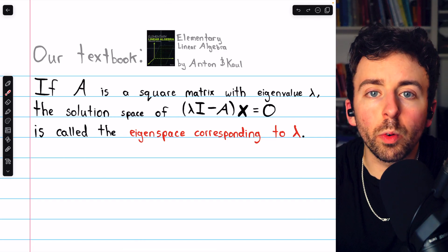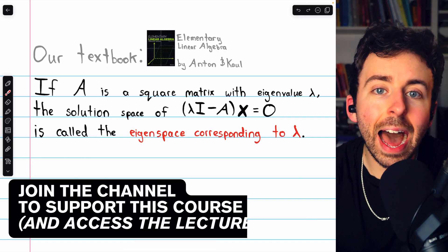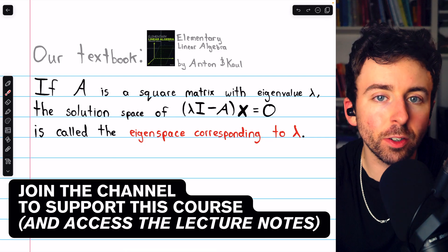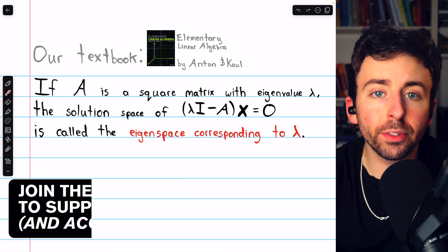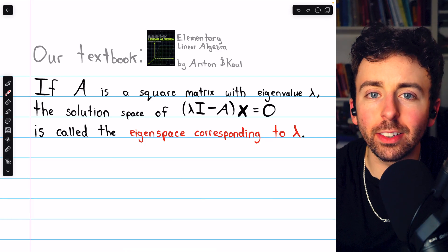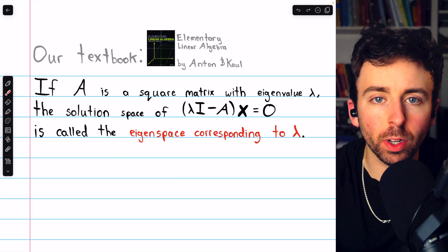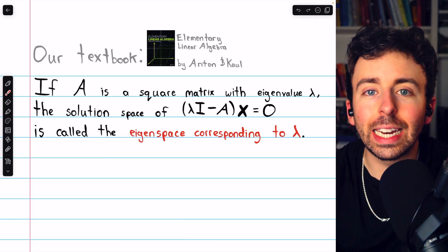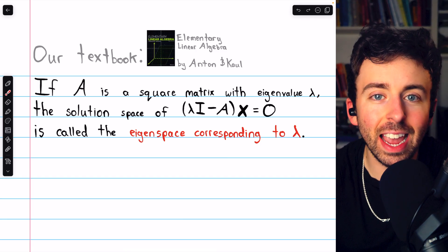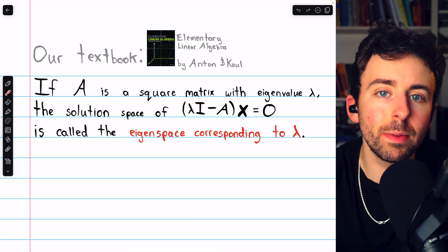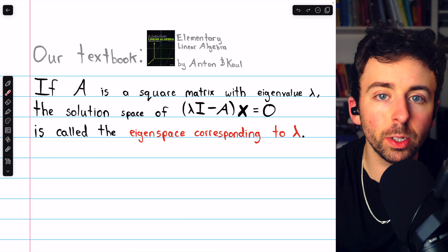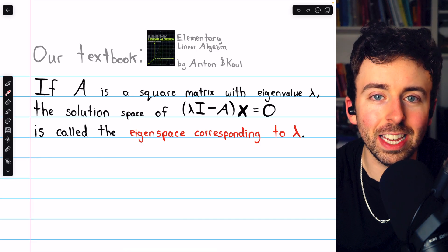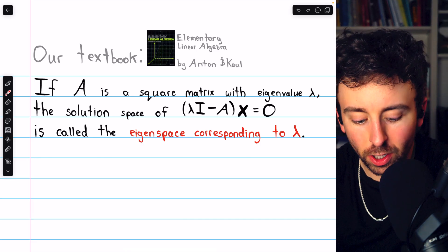In this video, we're going to go over what the eigenspace corresponding to an eigenvector is. We'll also discuss how to find it and what it looks like geometrically. We'll go over a 2x2 example of finding a basis for an eigenspace and a 3x3 example. Let's begin with the definition.